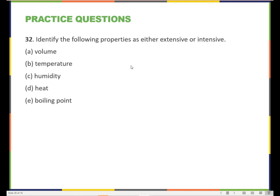Alright, go ahead and pause the screen again for a couple of minutes and try to work on this one. Okay, identify the following properties as either extensive or intensive. Okay, so remember, extensive is when something depends on the amount of material that's present. And intensive is a property that does not depend on the amount of material.